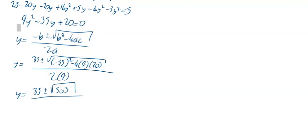So far we've got 35 plus or minus the square root of 505 all over 2 times 9 which is going to be 18. So when you do that in your calculator you get y is equal to 3.19290 to 5 decimal places, or the other one you would get 0.69599 again to 5 decimal places.